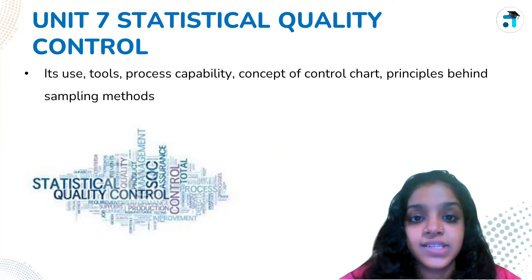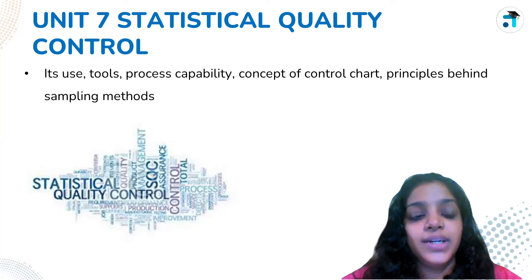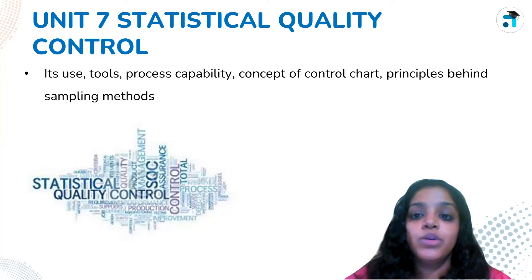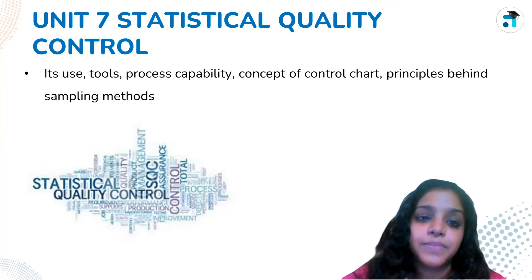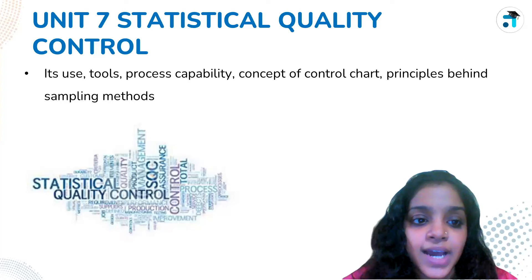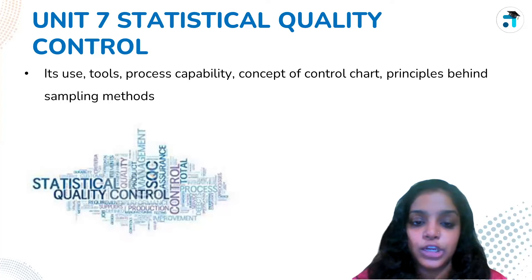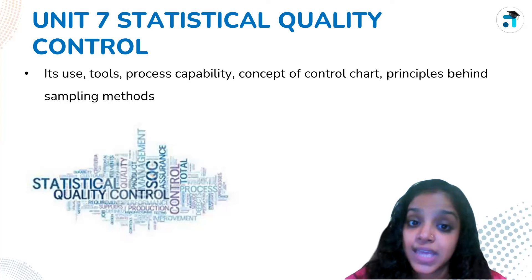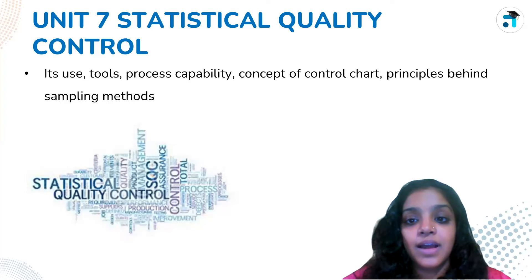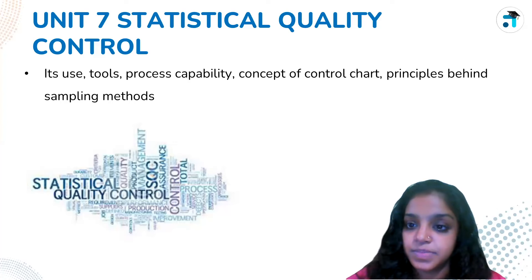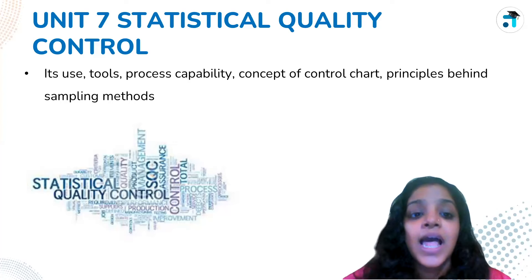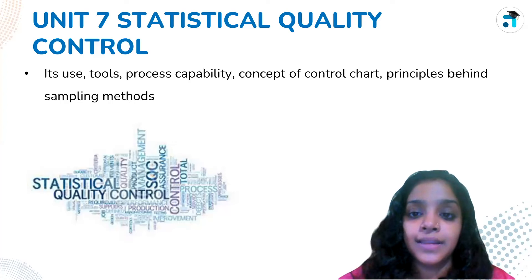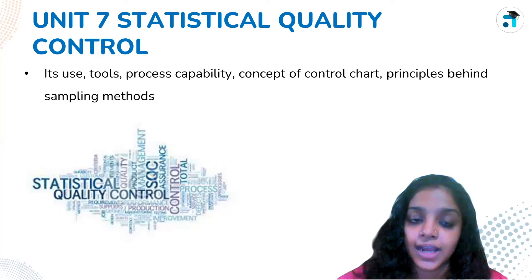Unit 7 is Statistical Quality Control. The tools that can be used include process capability, control charts, and sampling methods — these are the principles discussed in this unit.